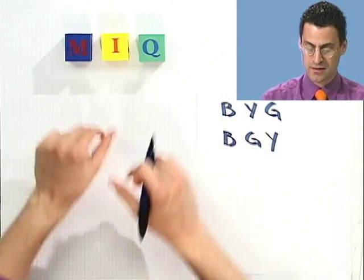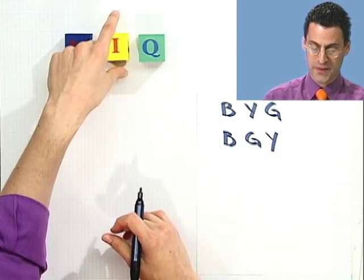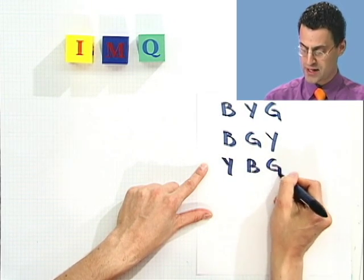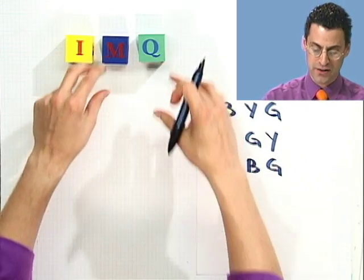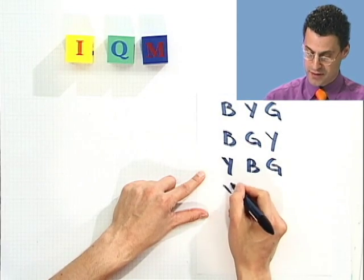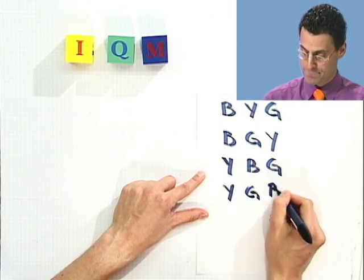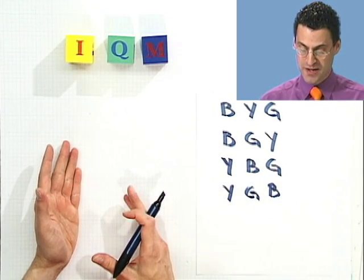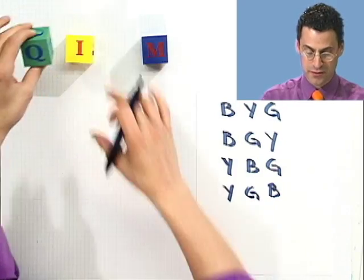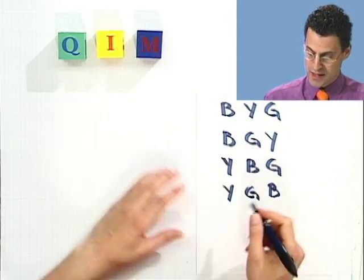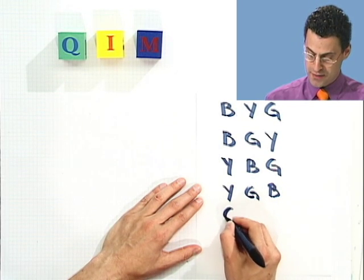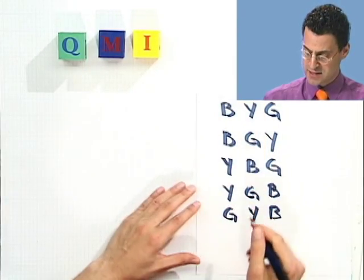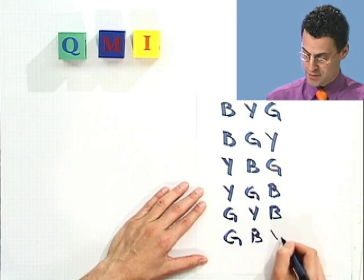Then I can go back to the first ordering but now put the yellow in front — that's yellow, blue, green. Now I could switch these two and I would have yellow, green, blue. What else could I do? Absolutely — I could put green first and have green, yellow, blue. And I could switch those and get green, blue, yellow.